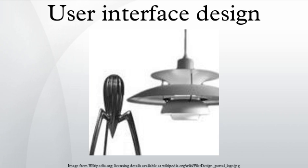Information Architecture involves the development of the process and/or information flow of the system. Prototyping involves the development of wireframes, either in the form of paper prototypes or simple interactive screens. These prototypes are stripped of all look and feel elements and most content in order to concentrate on the interface. Usability Inspection involves letting an evaluator inspect a user interface. This is generally cheaper to implement than usability testing, and can be used early in development to evaluate prototypes or specifications. Common usability inspection methods include cognitive walkthrough, which focuses on the simplicity of accomplishing tasks for new users; heuristic evaluation, in which a set of heuristics are used to identify usability problems in the UI design; and pluralistic walkthrough, in which a selected group of people step through a task scenario and discuss usability issues.